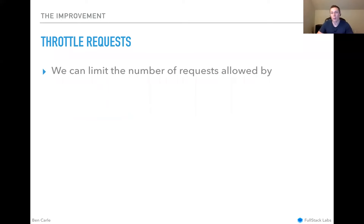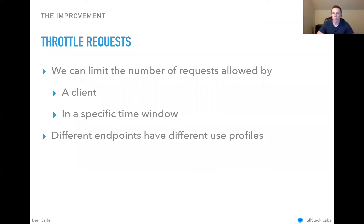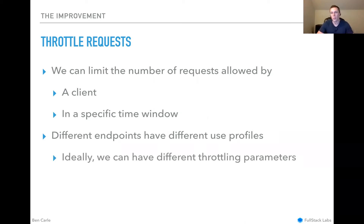We want to throttle requests and reduce the number of requests a single client can make — limiting the number of requests allowed for a particular client in a particular time window. We don't want to shut off a client altogether since a real client might mistakenly do something unusual. We can say: if you make too many requests in a minute, 10 minutes, an hour, or a day, we're going to block you until that time window is over.